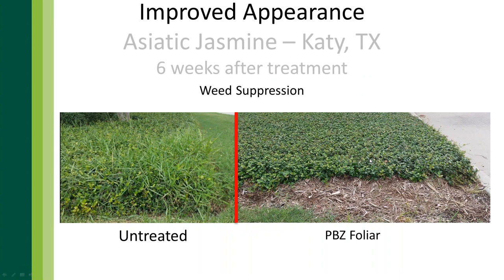We can also see weed suppression in ground covers — a great use of TrimTech that will probably become more popular. Here we have an untreated bed with herbaceous grass material growing up through the ground cover versus our treated bed of Asiatic jasmine. Not only is the ground cover regulated, but weeds underneath were over-regulated and never grew to the point of breaking through the ground cover canopy. If you treat your ground covers early in the spring before weeds begin to break through, you can actually reduce weeds in those beds.